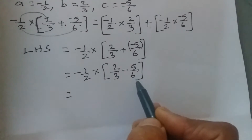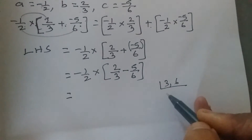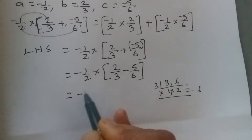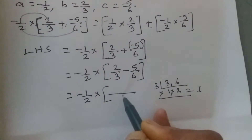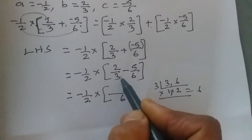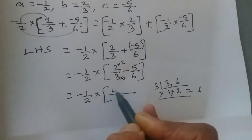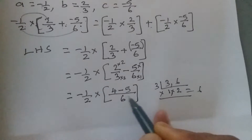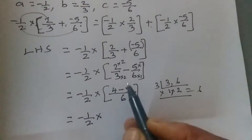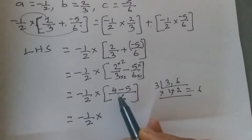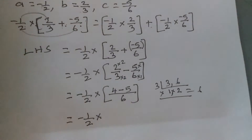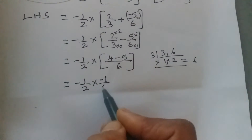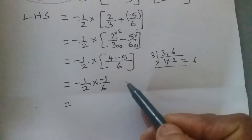For subtraction, denominators must be the same. Finding LCM of 3 and 6: LCM is 6. So 2/3 becomes 4/6, and 5/6 remains 5/6. Inside the bracket: 4/6 − 5/6. Signs are different, so we subtract: 5 − 4 = 1, with the sign of the greater number giving −1/6. The bracket is now simplified to −1/6.